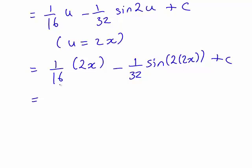That'll cancel and simplify a bit. 1 on 16 times 2x, that just becomes x divided by 8 minus 1 on 32 times sin 4x plus c.